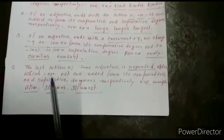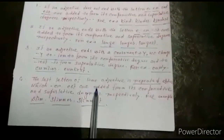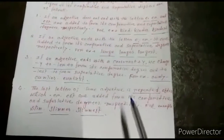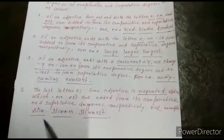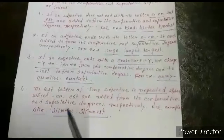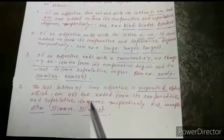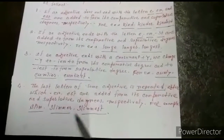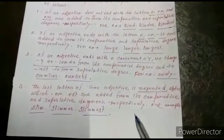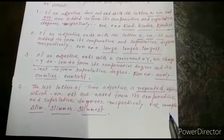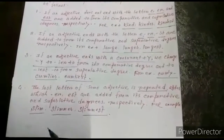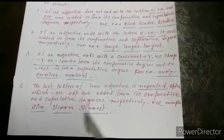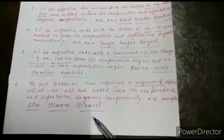Number 4: The last letter of some adjectives is repeated, after which ER and EST are added to form the comparative and superlative degrees respectively. For example: slim → slimmer → slimmest.